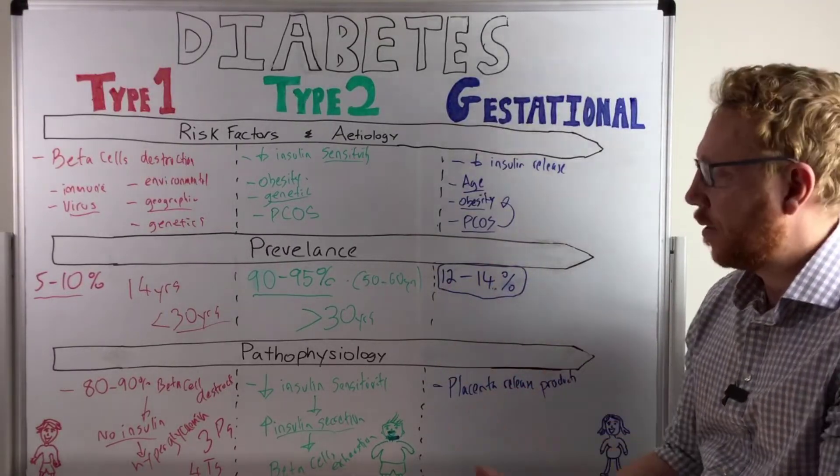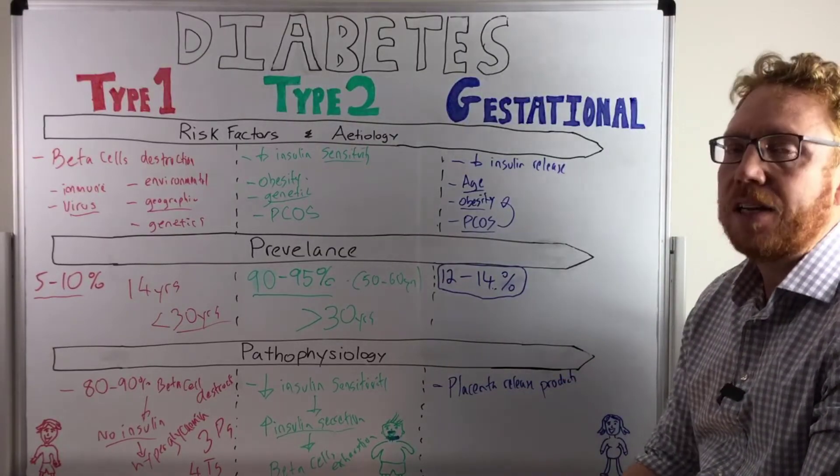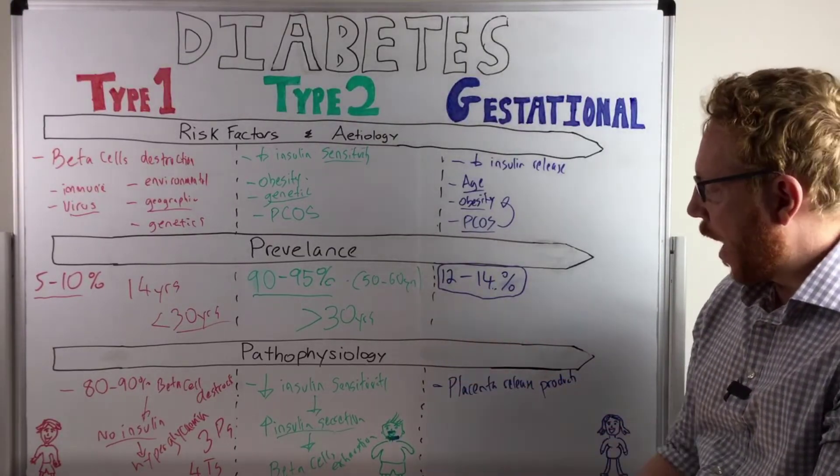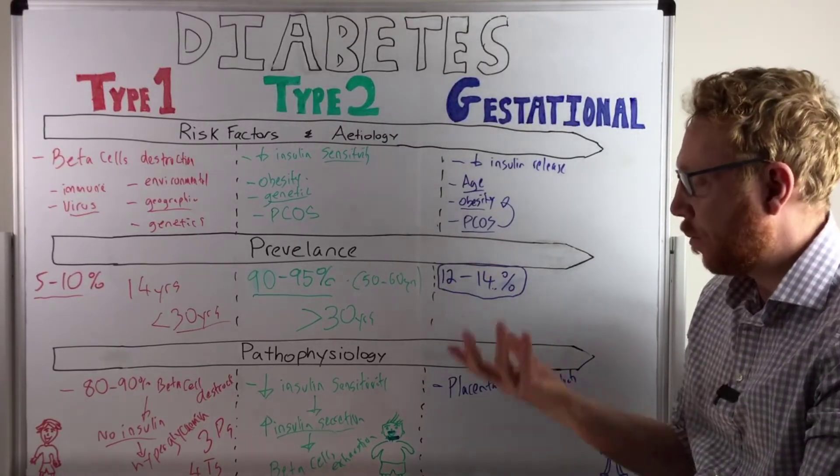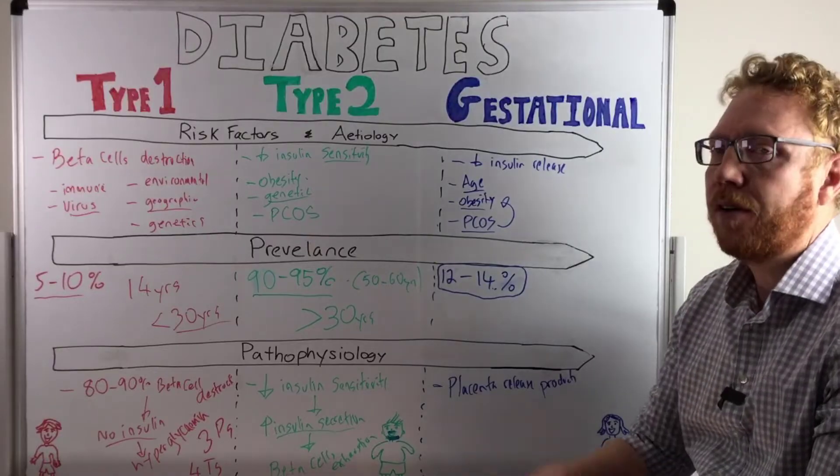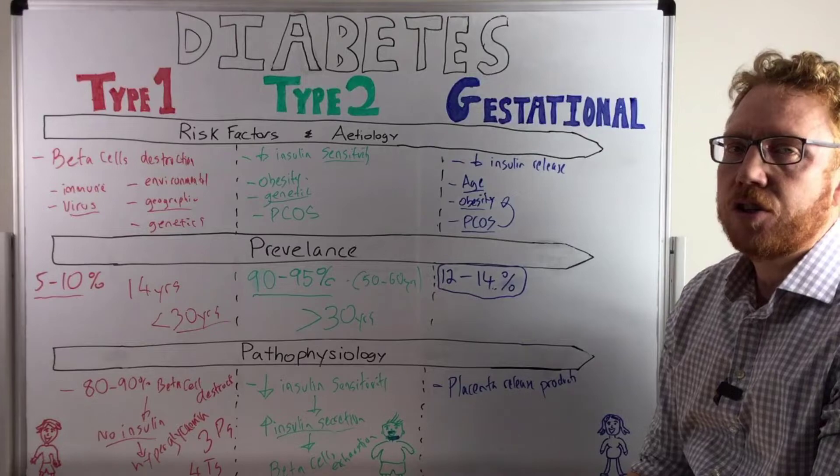And what that normally does in all pregnancies is actually decrease the sensitivity of insulin at the tissue level. What would happen is the mother would normally increase her insulin release from a pancreas. So the pancreas would counter this by increasing the beta cell production of insulin.